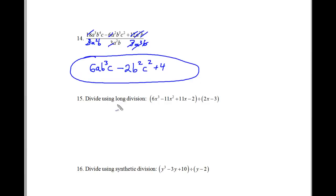Now in problem 15, we have to use long division. And since that number right here is a 2, we have to use long division and not synthetic division. It's not an option for us. So inside here, we're going to go 6x cubed minus 11x squared plus 11x minus 2.